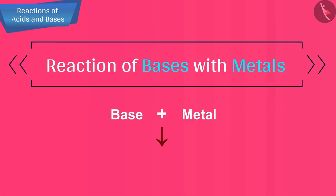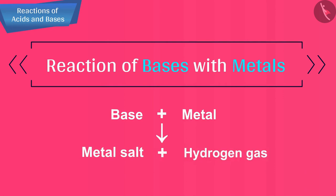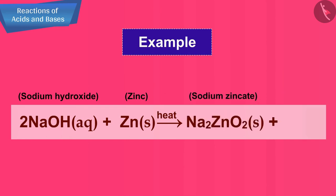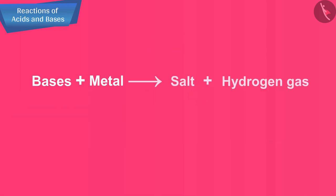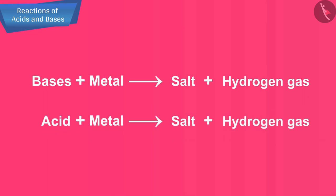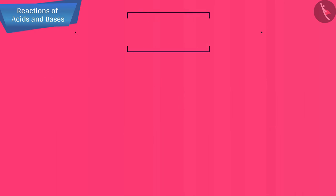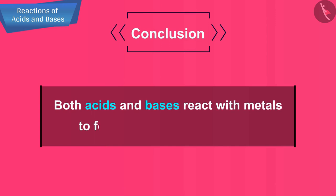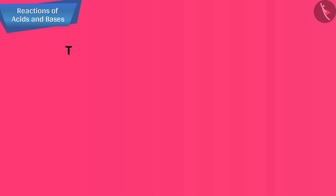Let's now talk about the reaction of bases with metals. When a base reacts with a metal, a metal salt and hydrogen gas are formed. For example, when sodium hydroxide solution is heated with zinc, sodium zincate and hydrogen gas are formed. We can show the formation of hydrogen gas using the same experimental setup. So, both acids and bases react with metals to form salt and hydrogen gas.